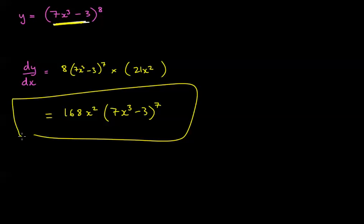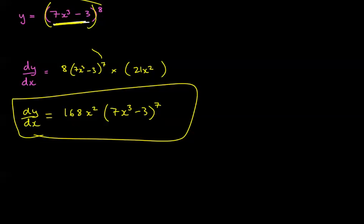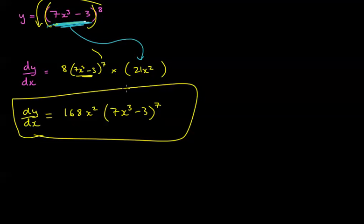And there you go — that's the chain rule done really quickly. The power comes to the front, you reduce it by 1, rewrite the bracket inside, then multiply by the derivative of the inside of the bracket, and clean it up. Practice that skill until you've nailed it. When you do the questions on the chain rule, check your answers against this.